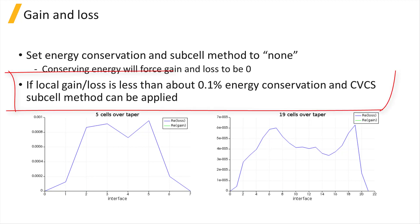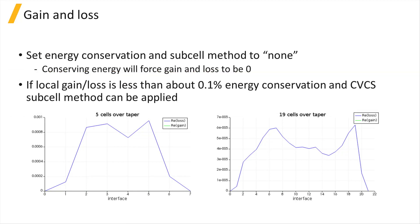Typically, if local gain and loss is less than about 0.1%, then this is considered close to conserving energy and you can apply energy conservation and the CVCS subcell method again. Otherwise, you may need to increase the number of modes or cells used until the gain and loss falls below 0.1%.